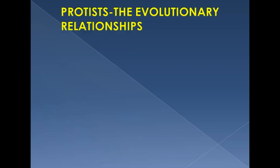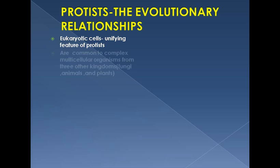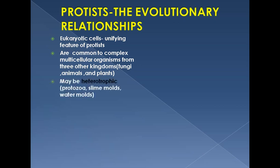Regarding evolutionary relationships, all protists share a common feature — eukaryotic cells. This is their unifying feature, and they are very common ancestors to complex multicellular organisms from the other three kingdoms: Fungi, Animals, and Plants. Biologists divide the protists into two broader categories: heterotrophic and autotrophic.